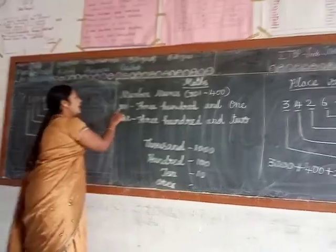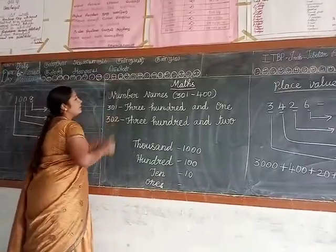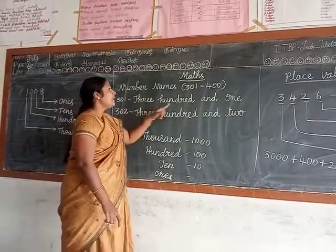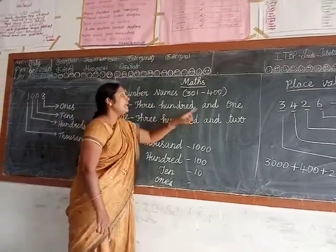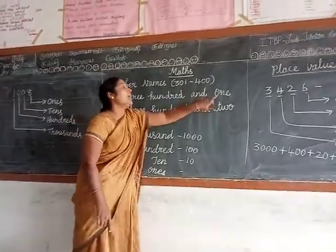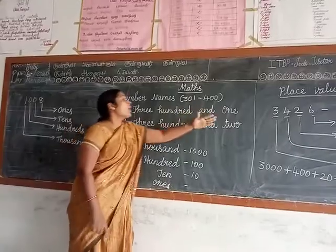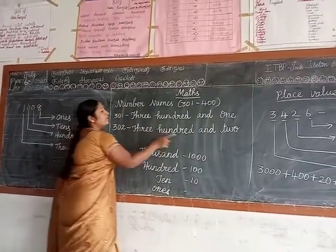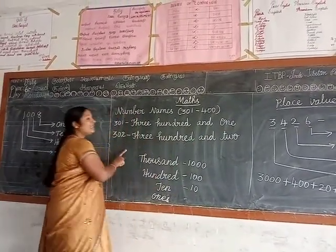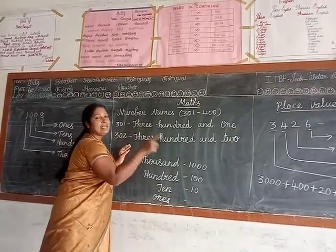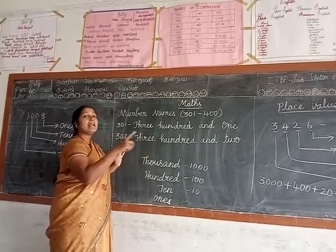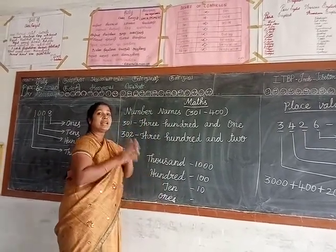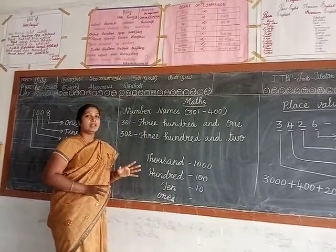The same way, for 301: the spelling of 3, then hundred — H-U-N-D-R-E-D — 100, and 1. So 301, 302, 303, 304 — all the way up to 400, the same way, children. There is no difference.